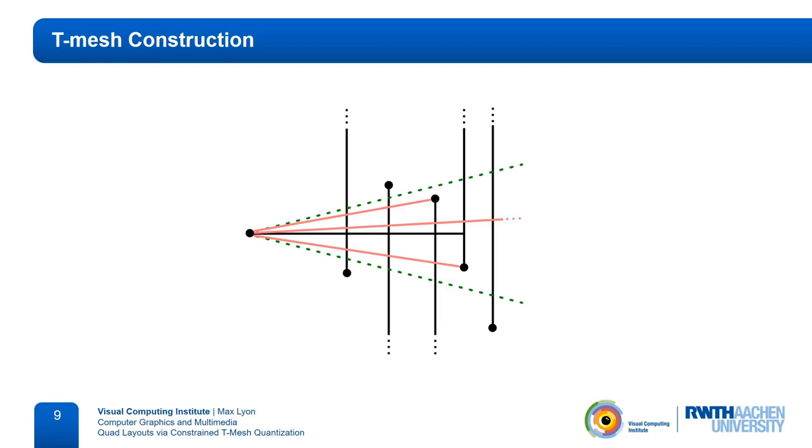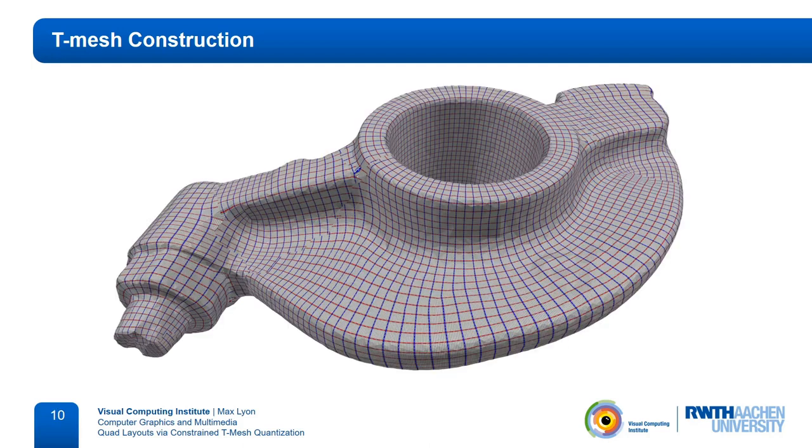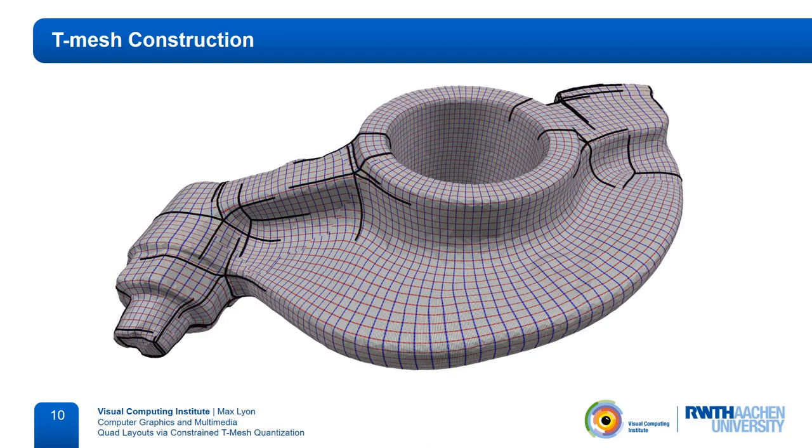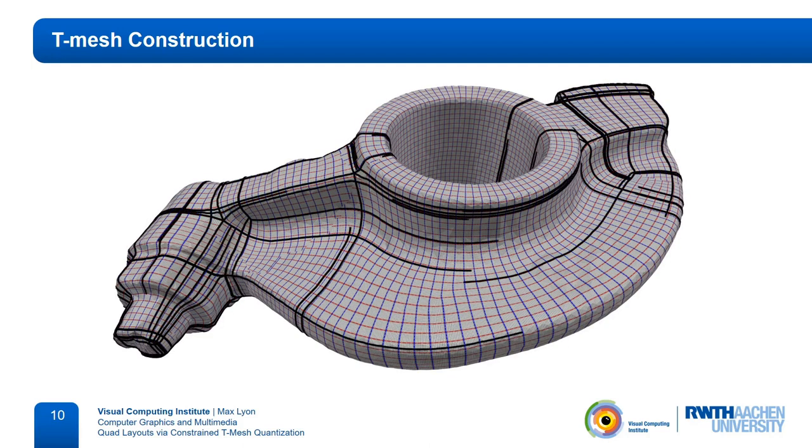How these constraints are set up will be discussed next. But first, this is how the motorcycle graph looks like with our new stopping criterion.